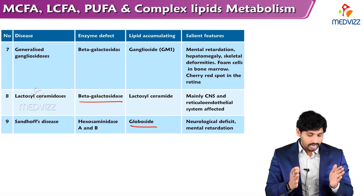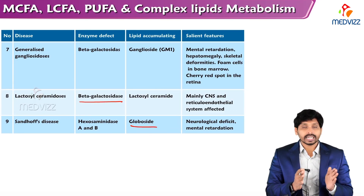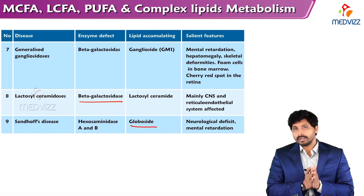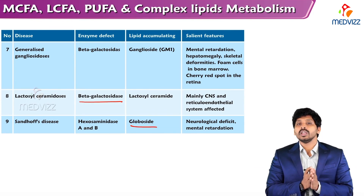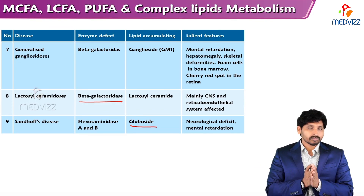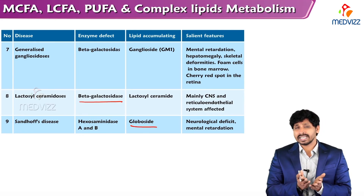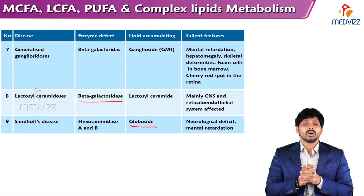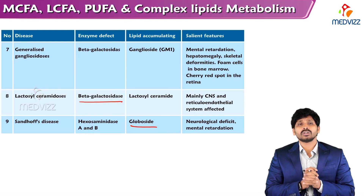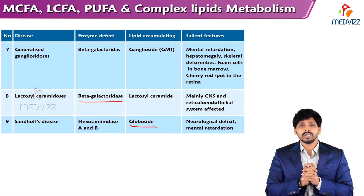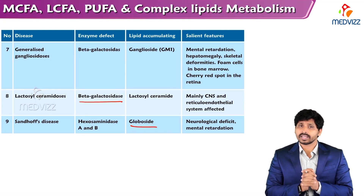There are nine types of sphingolipidosis, otherwise known as lipid storage disorders, that exist in the human body. All are inherited in nature. That's all about lipid storage disorders. Thanks for watching, thank you.